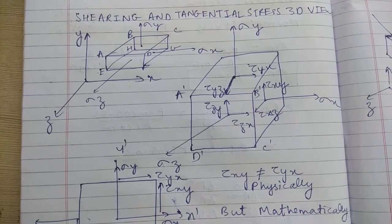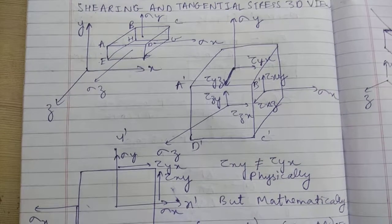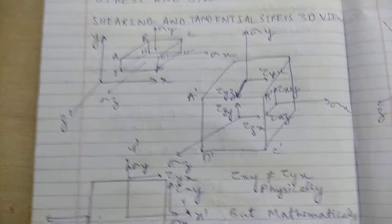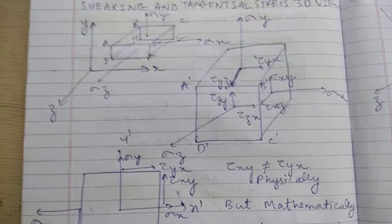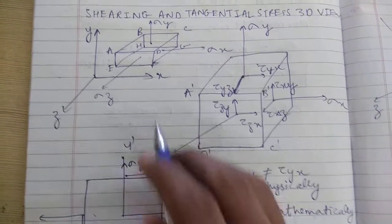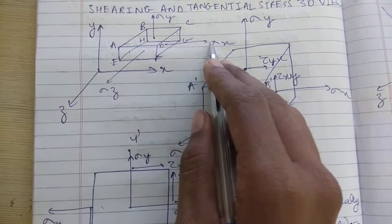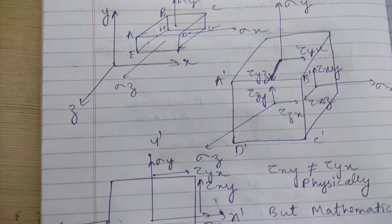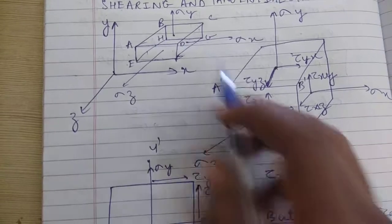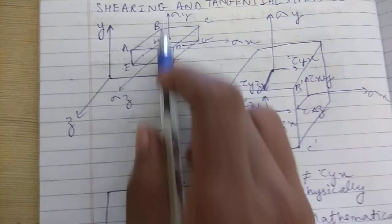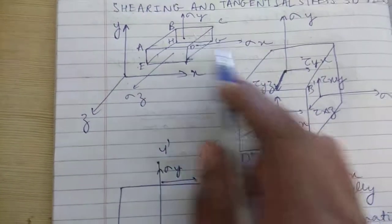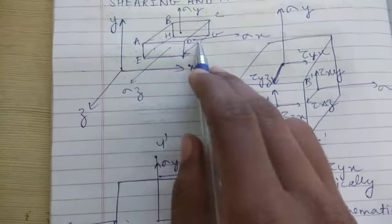Today we will discuss shearing and tangential stress in a 3D box and try to visualize stress and strain conditions. We consider a box where normal stresses are acting in the x direction, y direction, and z direction—that are sigma x, sigma y, and sigma z acting on the box.